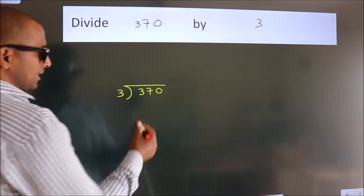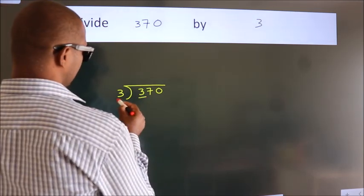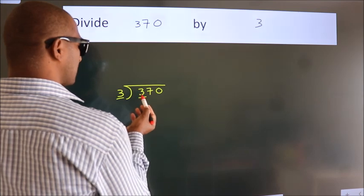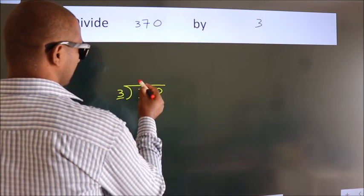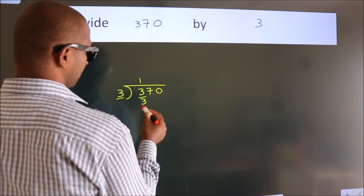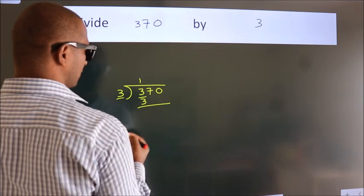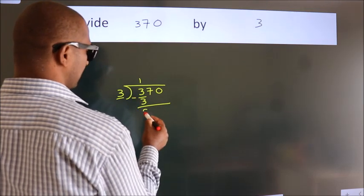Next, here we have 3, here 3. When do we get 3? In 3 table, 3 1s, 3. Now, we should subtract. We get 0.